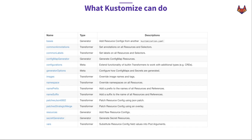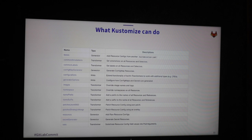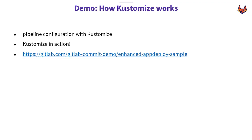What can you do with Kustomize? You can add annotations to any of your deployments, add common labels - think about deploying to development in one stage, adding the label 'development' to all your manifest resources, then in the next stage deploying to production with the label 'production', without doing any YAML templating. You can override images, namespaces, add prefix and suffix to resources. Also options to generate config maps, generate secrets, and so on.